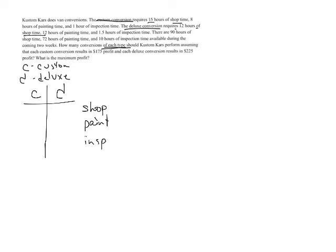Now we can fill in the information. The custom conversion requires 15 hours of shop time, 8 hours of paint, and 1 hour of inspection. The deluxe version, which I'm calling D, requires 12 hours of shop time, 12 hours of paint, and an hour and a half to inspect. That covers shop time, paint time, and inspection time.